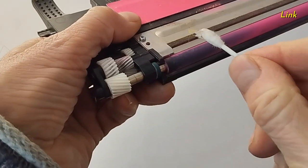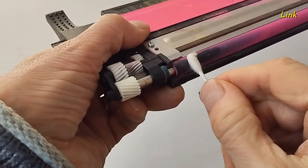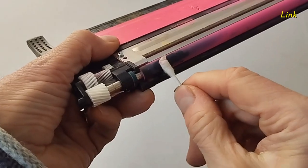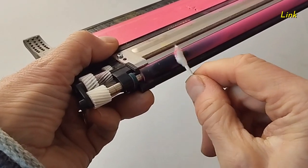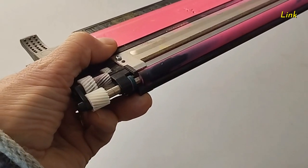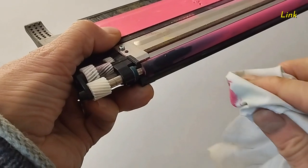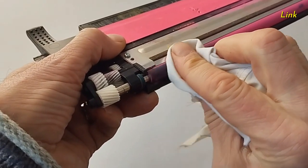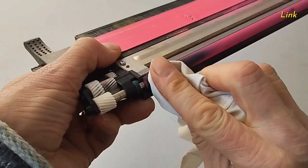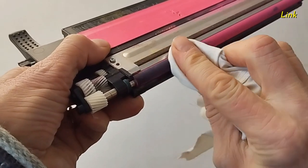To remove the adhesive, you can use a cotton swab lightly soaked in isopropyl alcohol. Gently scrub the affected area. After wiping, use a dry lint-free cloth to remove any moisture from the roller. Ensure the roller is completely dry.